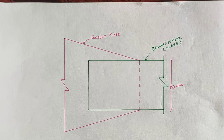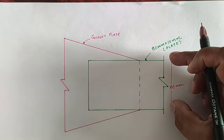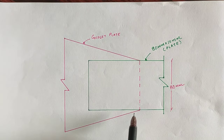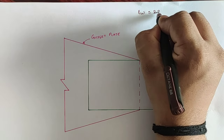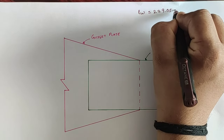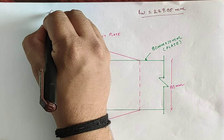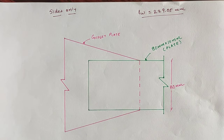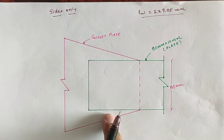We have to provide a total weld length of 229.05mm for the connection of the 80mm x 10mm thick tie plate with the gusset plate. The figure shows the side view of the given plate as 80mm x 10mm — width is 80mm and thickness is 10mm. We have provided the gusset plate with that connection. The required length for the connection is 229.05mm, and we have been asked to provide the welding at sides only.